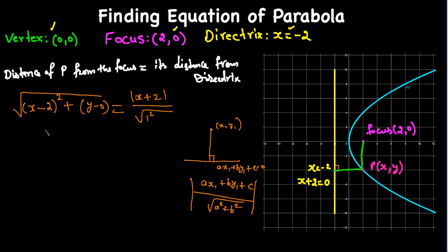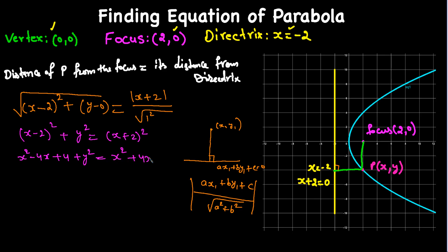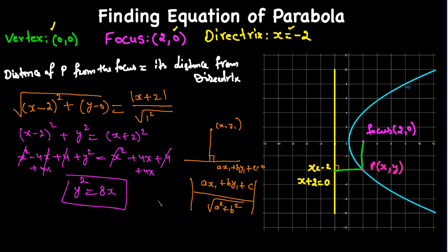Squaring both sides gives us (x - 2)² + y² = (x + 2)². Expanding: x² - 4x + 4 + y² = x² + 4x + 4. The x² terms cancel, the 4s cancel, and combining the x terms gives us y² = 8x. This is the equation of the parabola.